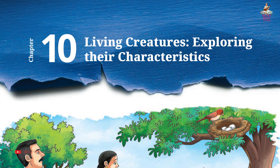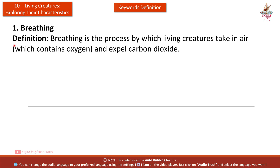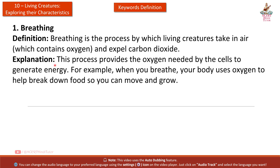Chapter 10: Living Creatures — Exploring Their Characteristics. Keywords and definitions from Grade 6 subject Science book. First: Breathing. Definition: Breathing is the process by which living creatures take in air which contains oxygen and expel carbon dioxide. Explanation: This process provides the oxygen needed by the cells to generate energy.